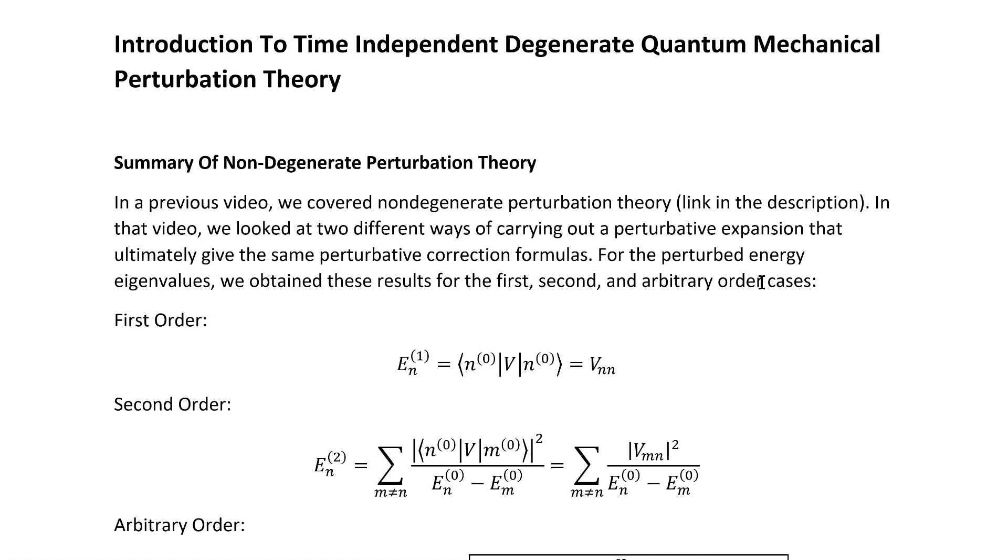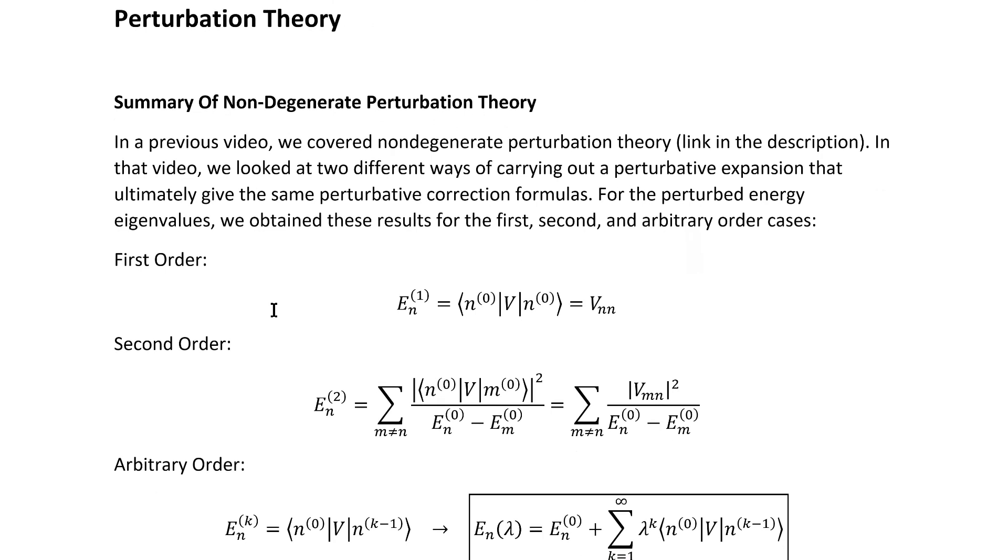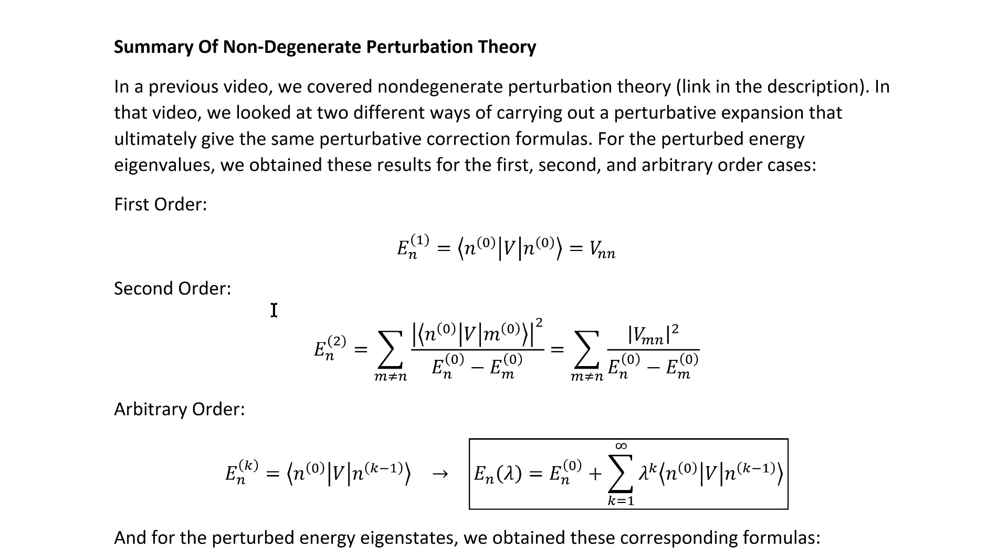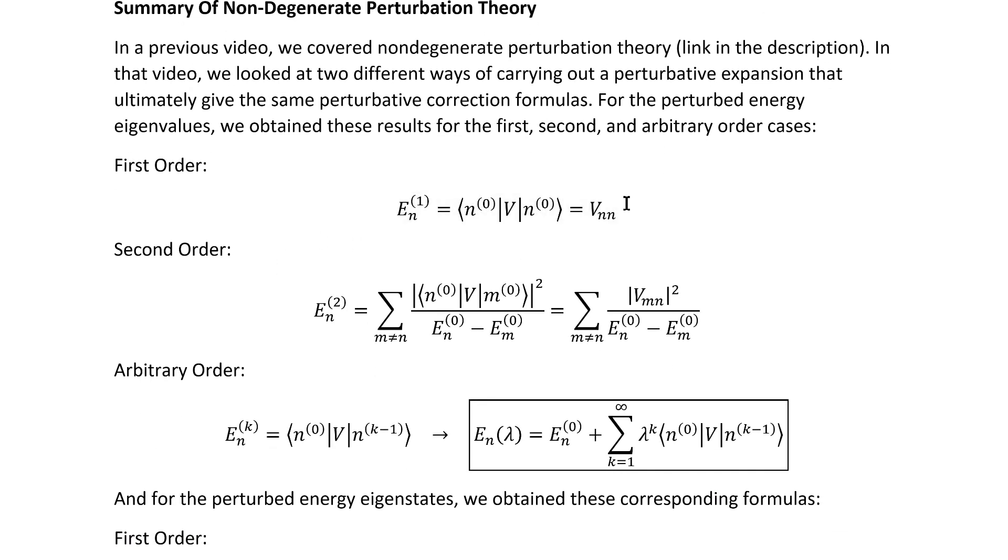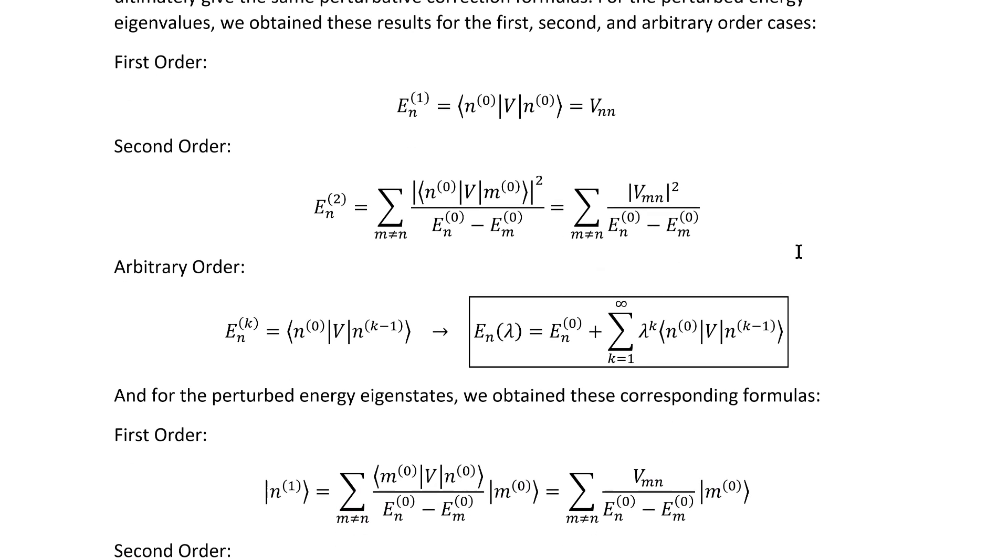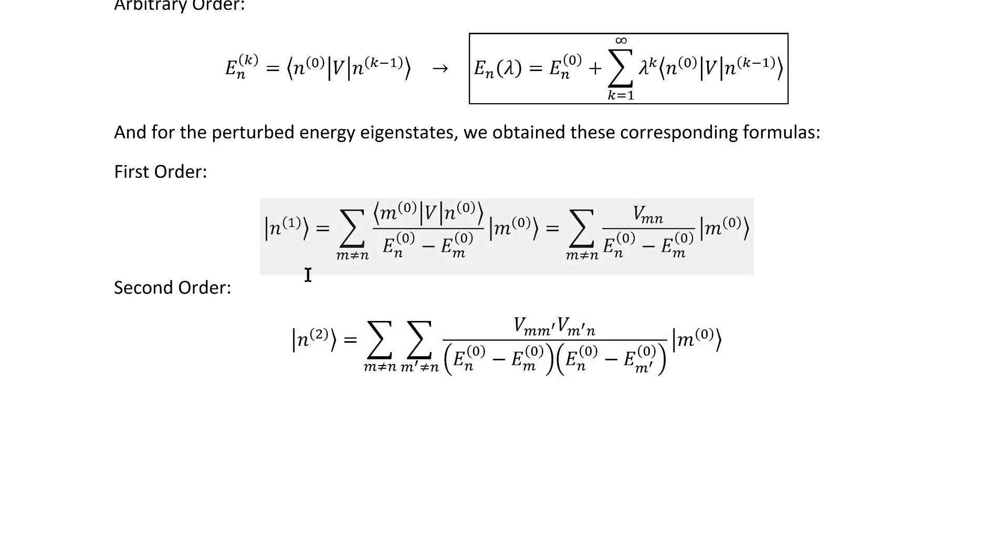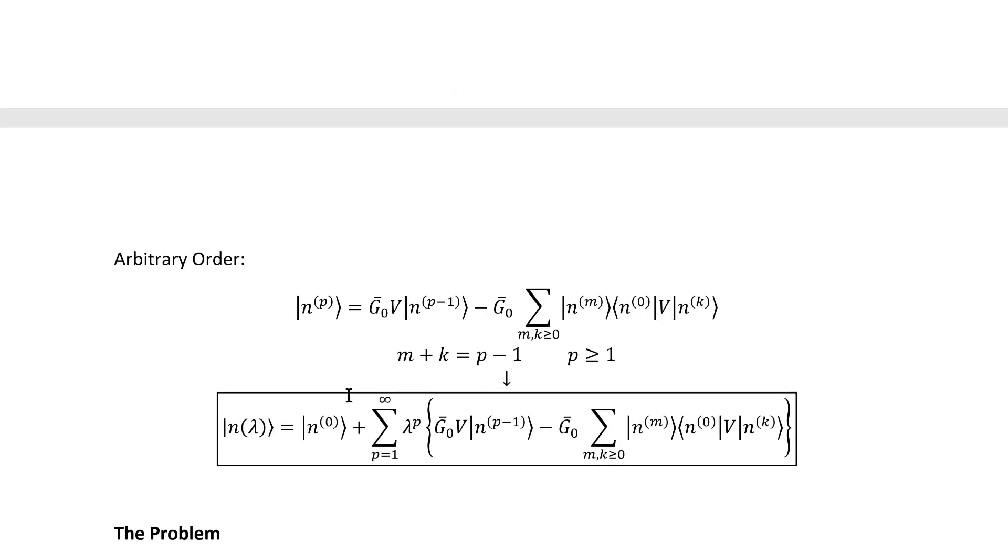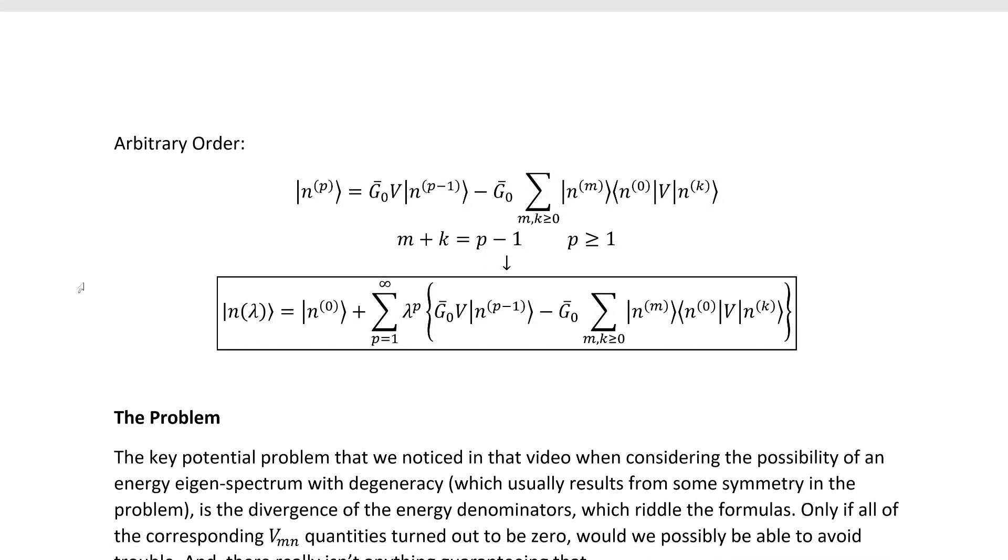Anyway, let's get into it. In a previous video, we covered the non-degenerate case. There's a link to that video in the description. In that video, we looked at two different ways of carrying out a perturbative expansion that ultimately gave the same perturbative correction formulas. For the perturbed energy eigenvalues, we obtained the following results for the first, second, and arbitrary order case, this probably being the most famous equation from quantum mechanical perturbation theory. And for the states, we got these two formulas for the first and second order corrections, and then this result for the arbitrary order case.